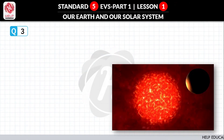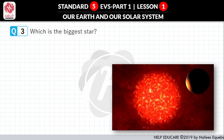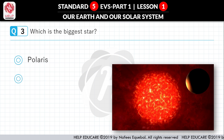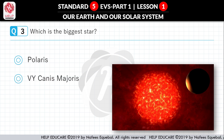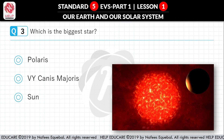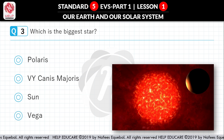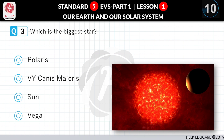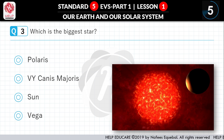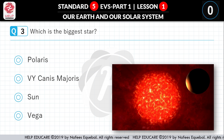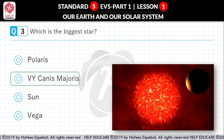Question No. 3: Which is the biggest star? First option: Polaris. Second option: VY Canis Majoris. Third option: Sun. Correct answer is VY Canis Majoris.